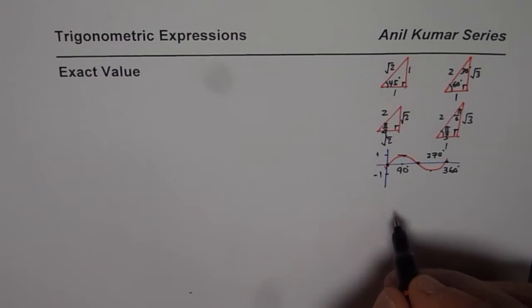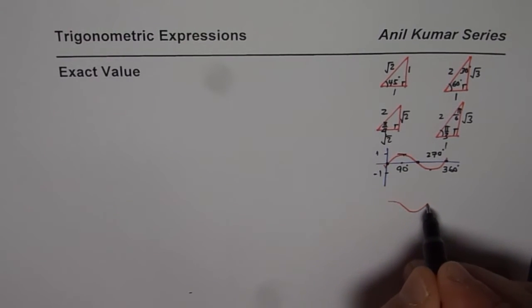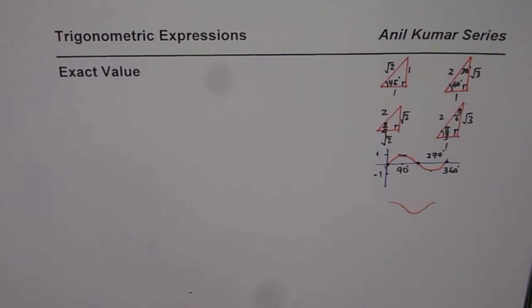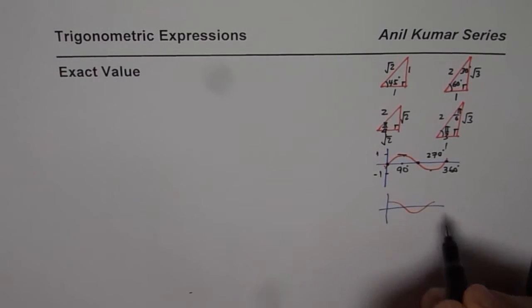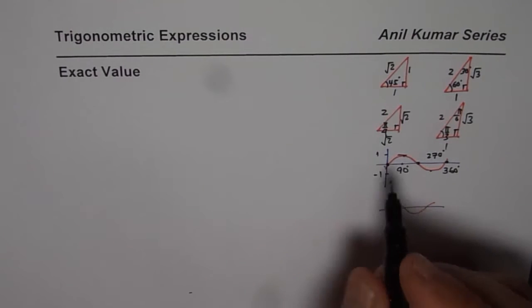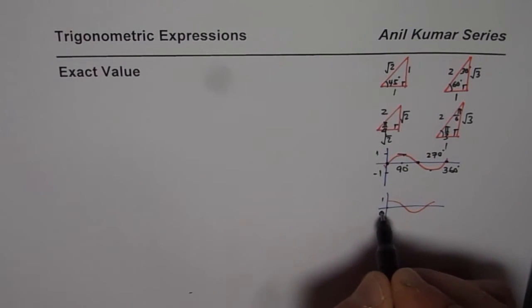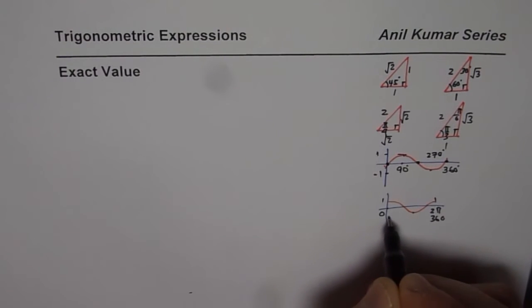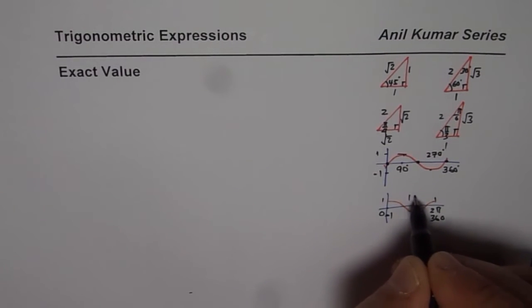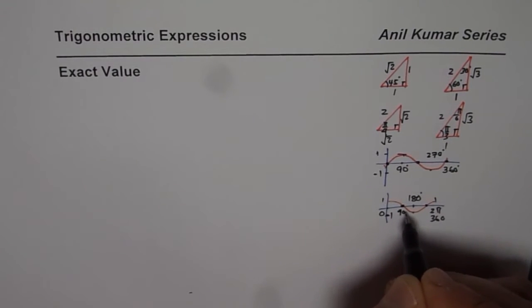On the other hand in case of cosine function which starts with a maximum we have 1 at 0, 1 at 2 pi or I should say 360 degrees, minus 1 at 180 degrees. 0 is at 90 and 270.